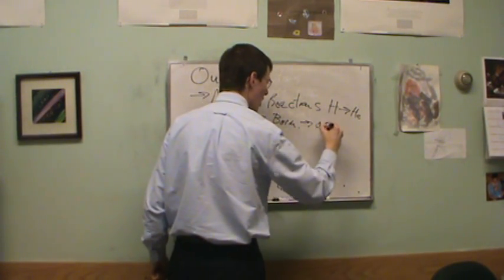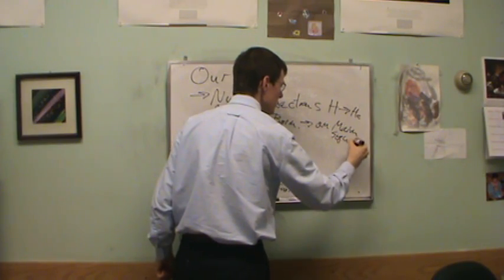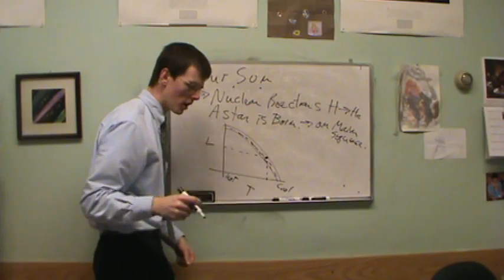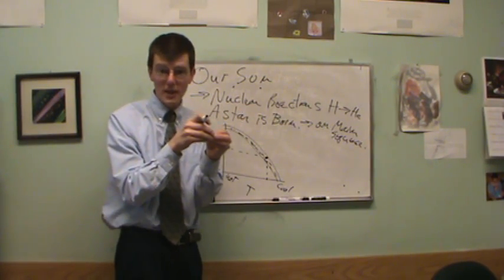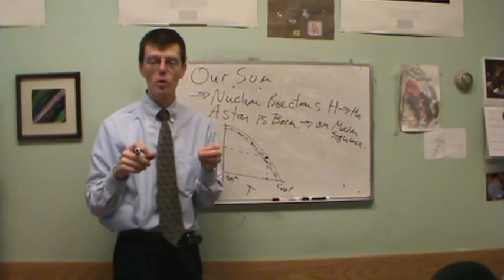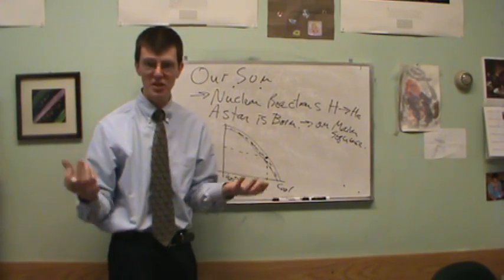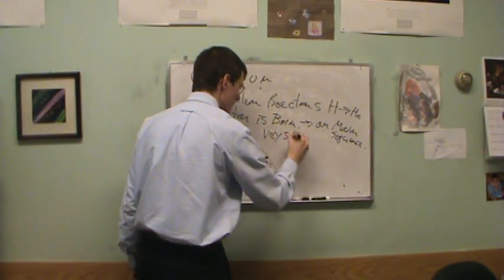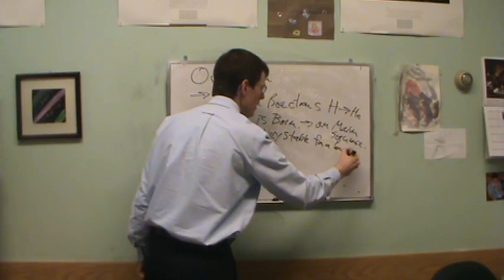the core kind of compensates and it's very stable on the main sequence. So the star is born. It's on the main sequence. It has very, I mean, it does change a little bit. Our sun started out a little bit less luminous and it's slowly grown a little bit more luminous over time. But when you're talking